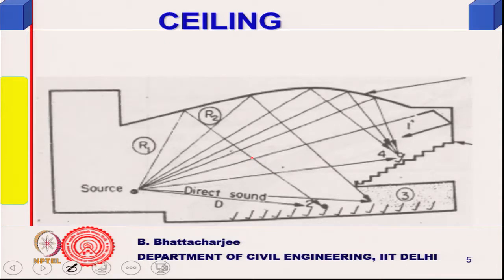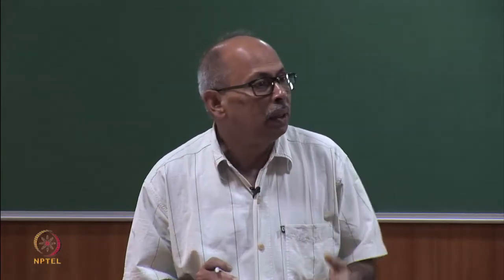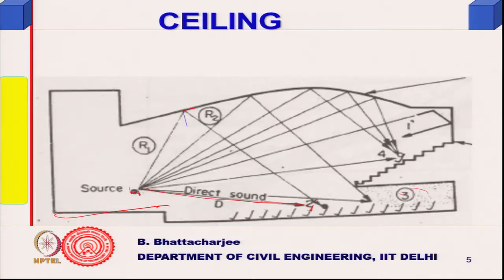It is important to have ceiling reflection. Looking at a typical auditorium profile, the proscenium stage is at the front. The source is somewhere on stage; direct sound reaches the audience directly. Several reflected sounds also reach the audience, reinforcing the direct sound — especially for seats away from the source. Reflected sound must reach the rear of the auditorium. This diagram also shows some acoustic defects, such as sound shadow regions.